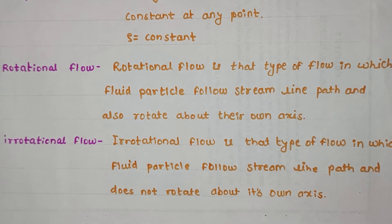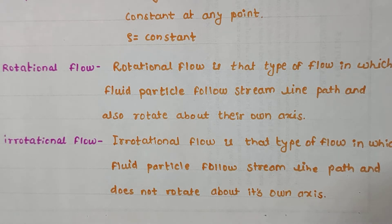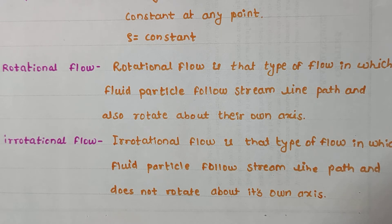The fifth type is rotational flow and irrotational flow. Rotational flow is the flow in which fluid particles follow a streamlined path and also rotate about their own axis — similar to the Earth, which follows a specific orbit while also rotating about its own axis. Irrotational flow is the flow in which fluid particles follow a streamlined path but do not rotate about their own axis.